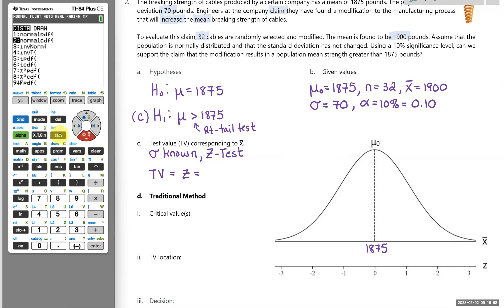So let's just go ahead and run our z-test. So stat test z-test. And we're entering the statistics that are provided, but we'll start with our mu naught, 1,875. And our sigma is 70. X-bar, 1,900. Sample size n, 32. And the direction of the test, mu greater than my mu naught number. So we want to make sure we do mu greater than the mu naught value. And then I'm going to go calculate.